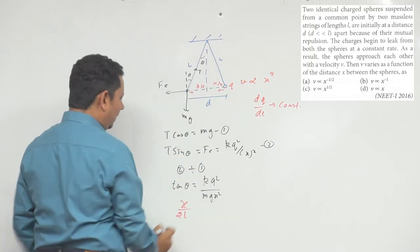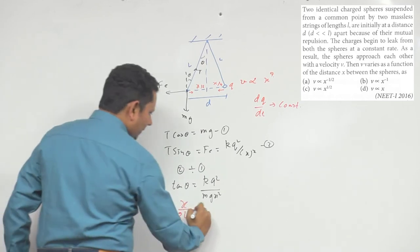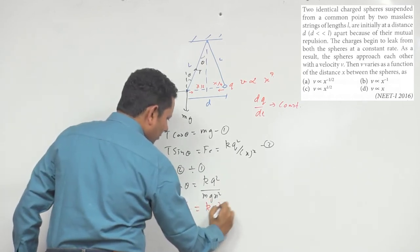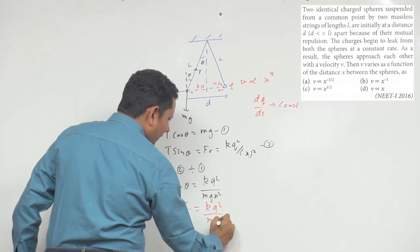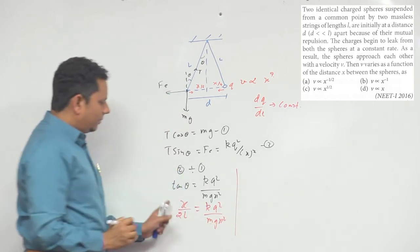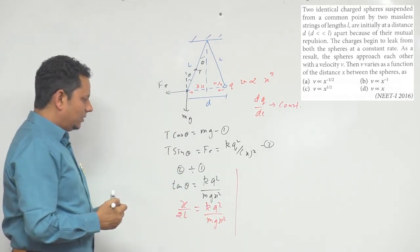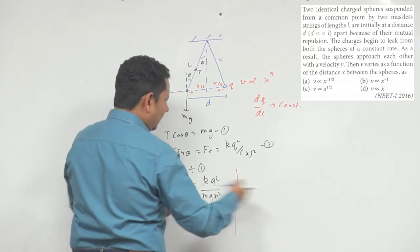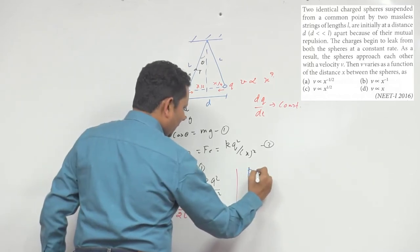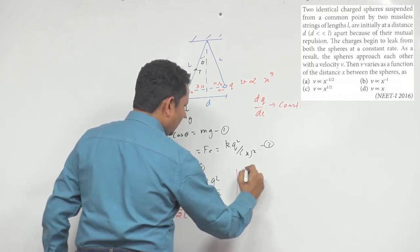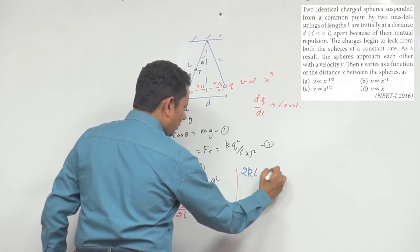This on your left hand side will be equal to k q square divided by mg x square, will be equal to x³. Now this, your x cubed will be equal to 4kl q square divided by mg.